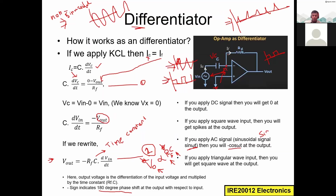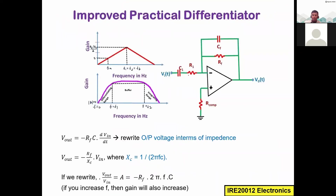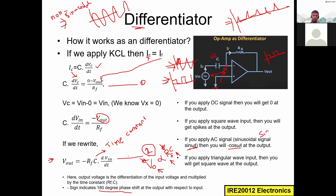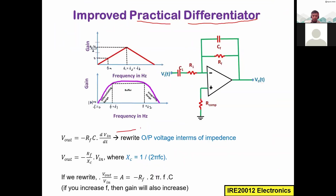We already know how the differentiator works. For a practical differentiator, we need to add a few more devices. I added one more input resistor and one more feedback capacitor — this is called a practical differentiator circuit. The output equation is v_out = -R_f * C * (dv_in/dt). This is the final equation derived for the simple or normal differentiator.